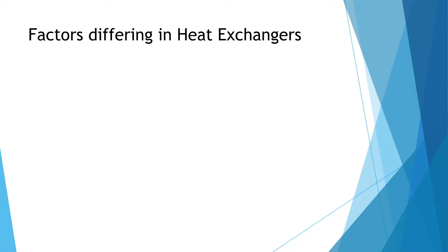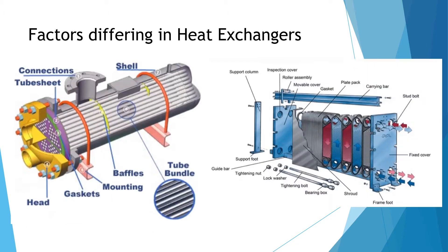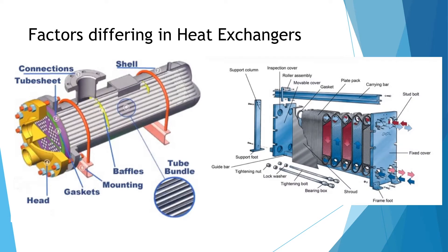Some factors that affect different types of heat exchangers include the construction style. Common construction styles of heat exchangers are plate type or tube type. Tube type heat exchangers are exactly what they sound like — a bundle of small tubes where the fluid flows through them. Plate heat exchangers utilize several layers of flat plates to create channels for the fluids to flow through.